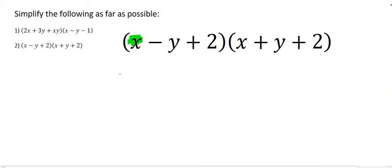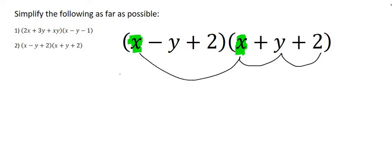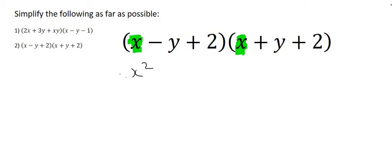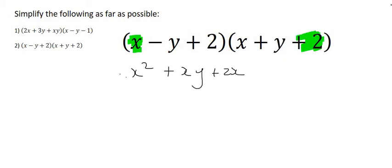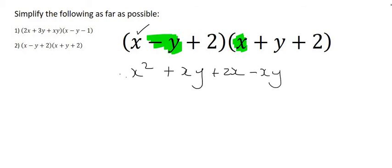Moving on to number 2, we're going to start with this x, which is going to have to multiply with everything in the second bracket. x times by x gives us x squared. x times by positive y gives us positive xy. x times by positive 2 gives us positive 2x. Now we move on to the negative y. Multiplying negative y with x gives us negative xy. Negative y with positive y gives us negative y squared. And negative y with positive 2 gives us negative 2y.